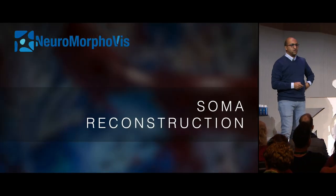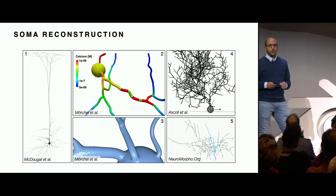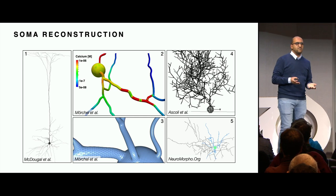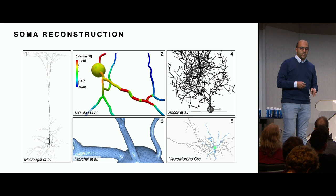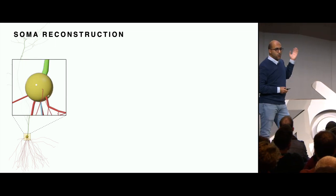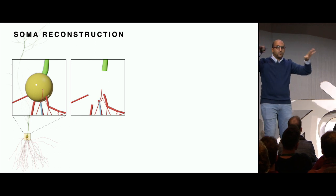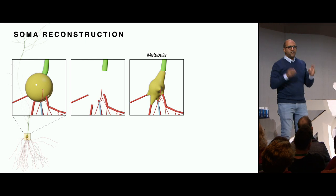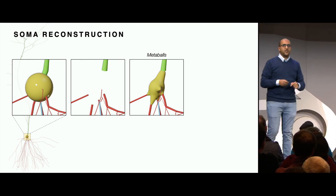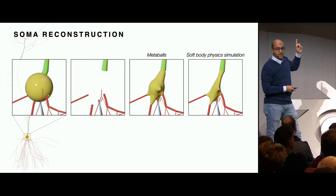The next thing is soma reconstruction. The soma is the cell body. By default in most neuroscientific applications they use a symbolic approximation - either a sphere or cylinders to represent the soma - but this is not reality. It's really hard to reconstruct 3D profiles of the soma. So what we do is ignore the sphere, get the initial points of all arborization, and use Blender to reconstruct a faithful approximate representation using metaballs.